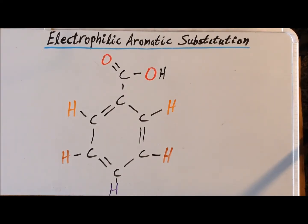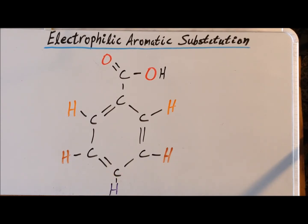Ring deactivators, like the carboxyl group, make the ring less susceptible to electrophilic aromatic substitution than the parent benzene compound. They reduce the reactivity at the ortho, meta, and para positions, but they reduce it the least at the meta positions. Therefore, they have the effect of directing the next substituent to the meta position.